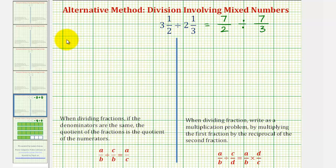For seven-halves, we'll multiply by three over three to obtain a denominator of six. And for seven-thirds, we'll multiply by two over two to obtain a common denominator of six.